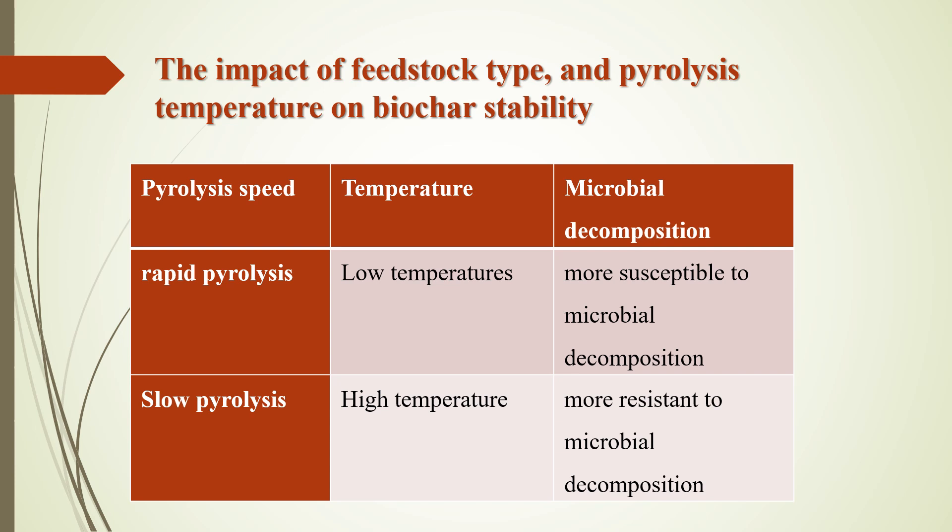Feedstock type and pyrolysis temperature influence biochar stability, as shown in this table, which was obtained from previous studies. Rapid pyrolysis and low temperature produce incomplete pyrolysis of biomass, making it more susceptible to decomposition by microbes, while high temperature and slow pyrolysis lead to the production of complete pyrolysis of biomass that is more resistant to microbial degradation.